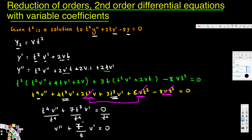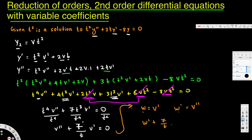To reduce the order, we let w equal v prime, so w prime equals v double prime. Substituting these replacements, we get w prime plus 7 over t times w equals zero. This is a separable differential equation, since w prime means dw by dt and we can separate the t and w terms.